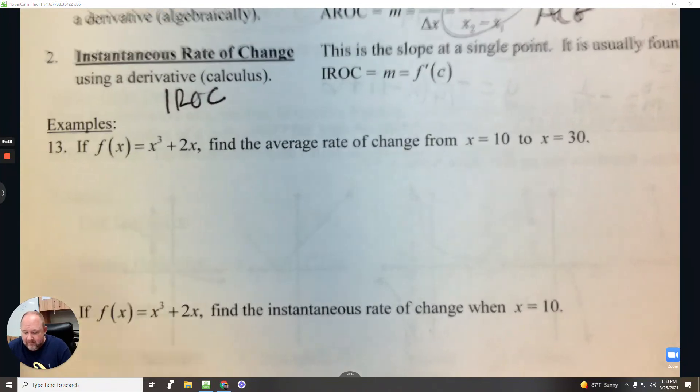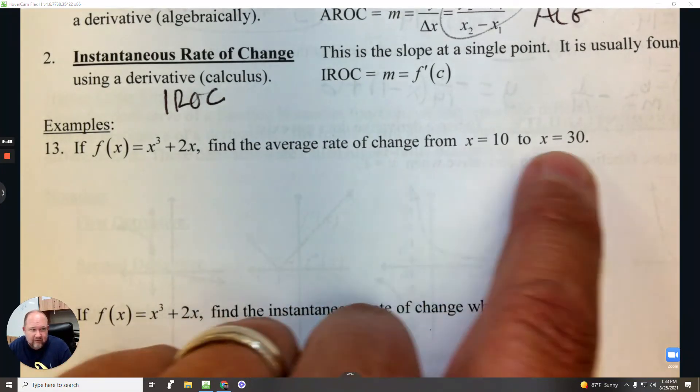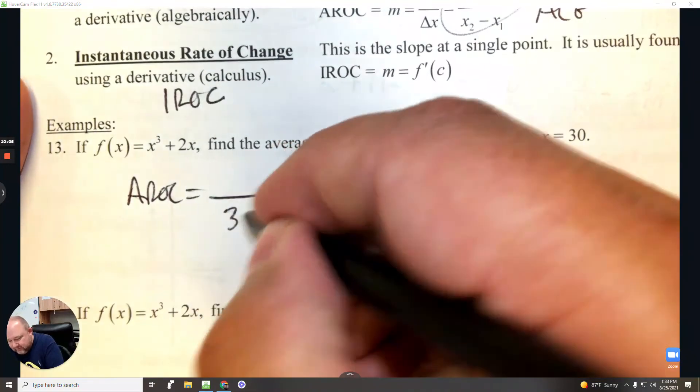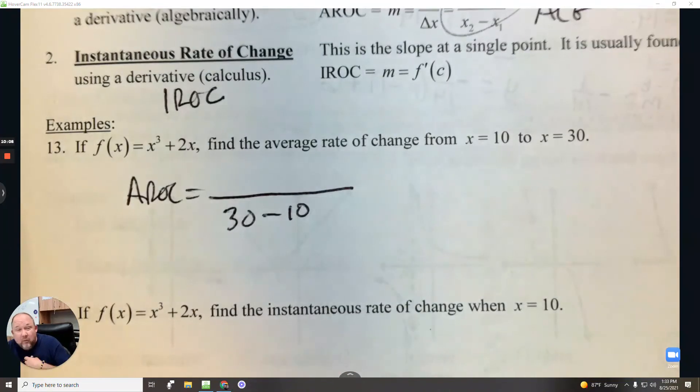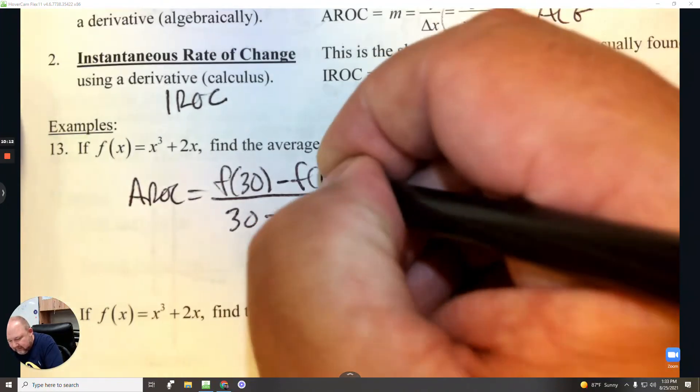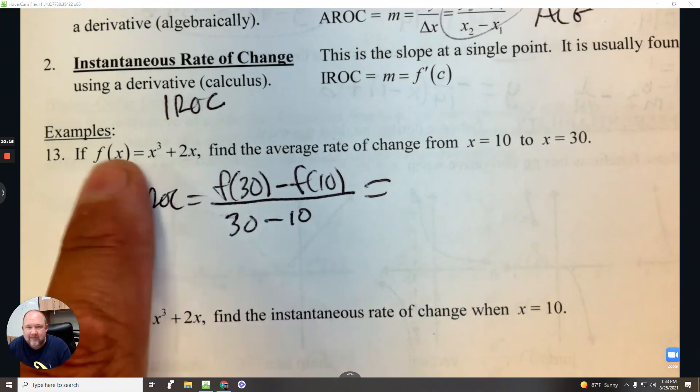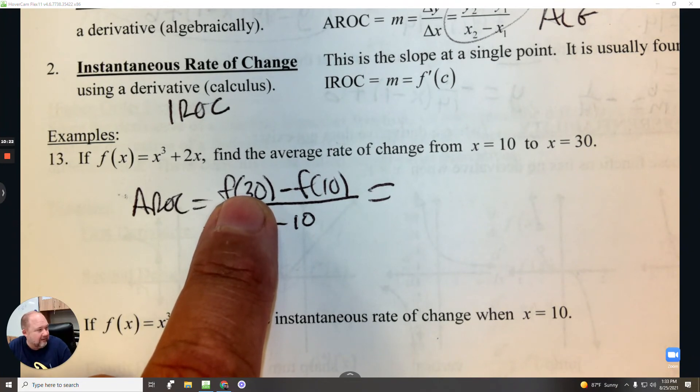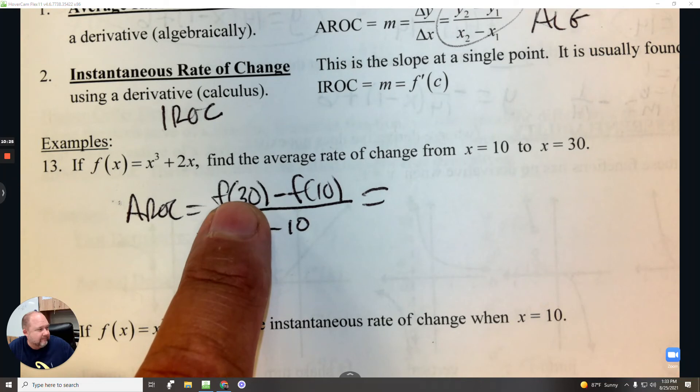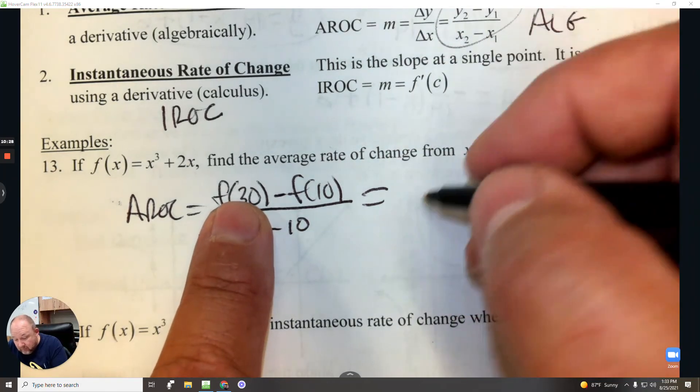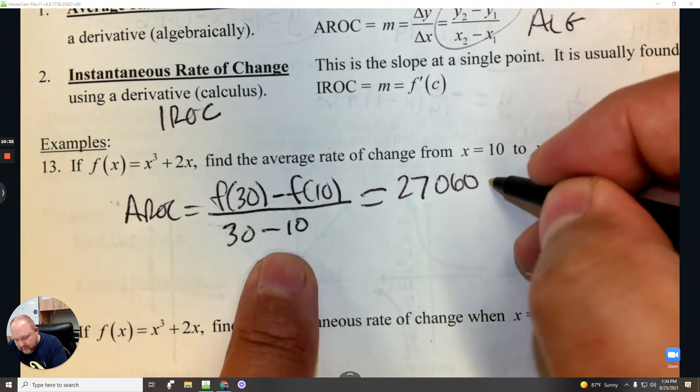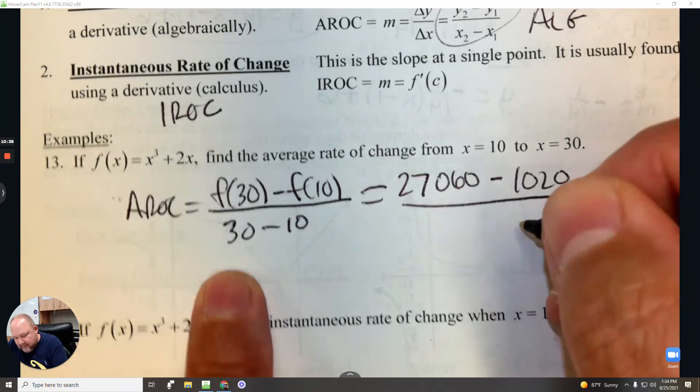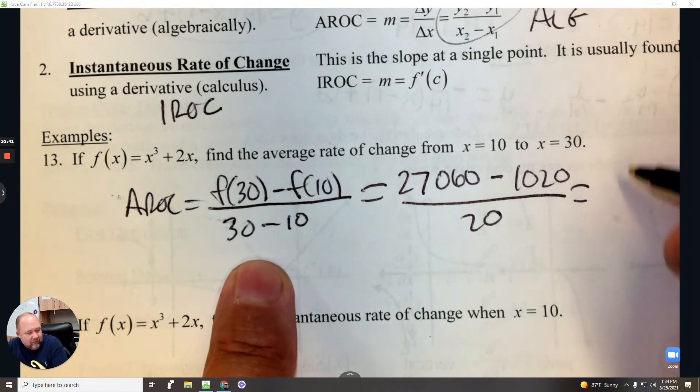For number 13, find the average rate of change from 10 to 30. So that's algebra. So that's going to be x2 minus x1. To find the y values I've got to plug in, so it's f at 30 minus f at 10. And I have to plug in to find those values. So 30 cubed, 3 times 3, that's 27,060. If I plug in 10 cubed, that's 1,020. And then divide by 20. That gives you 1,302.